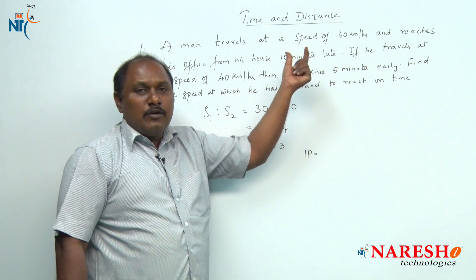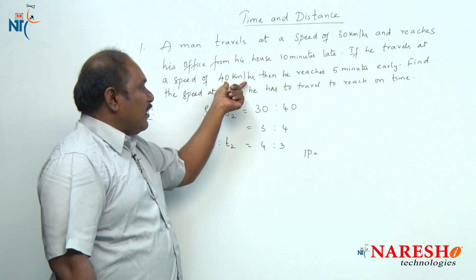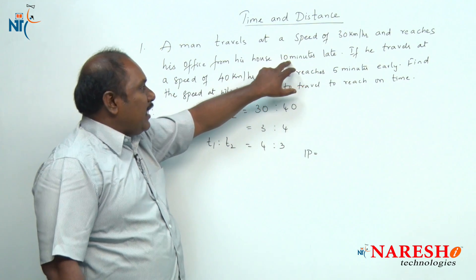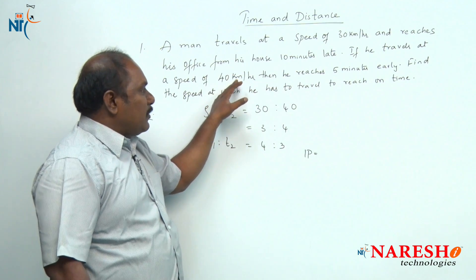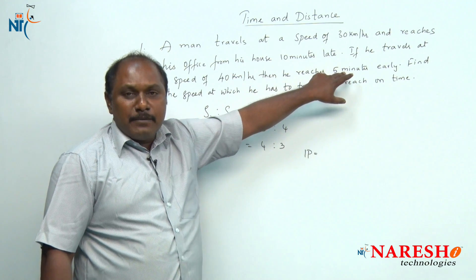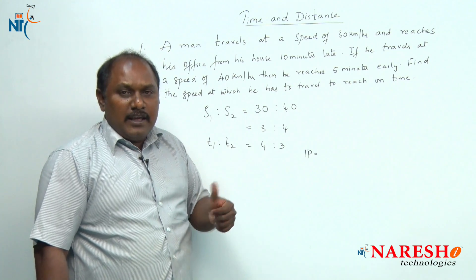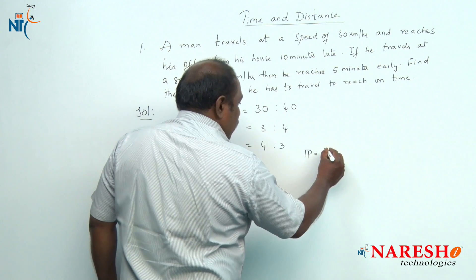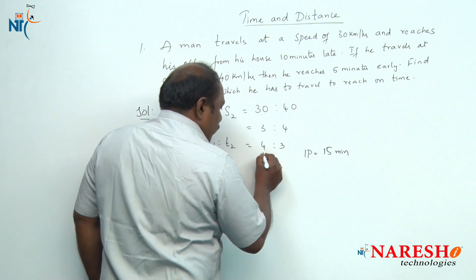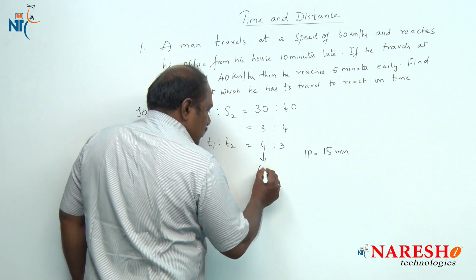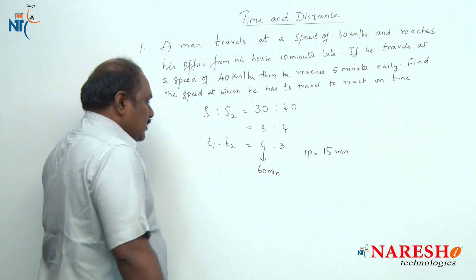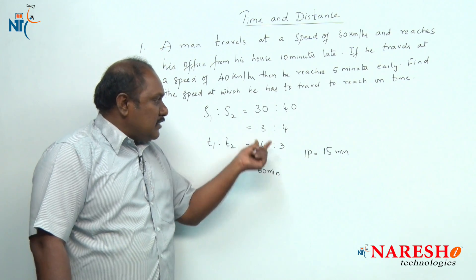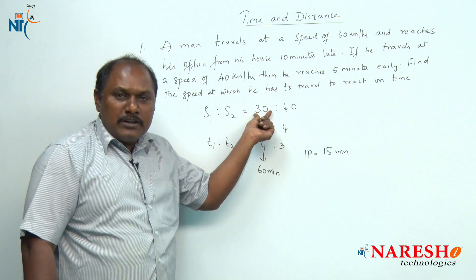Travelling at 30 kilometers per hour he is late by 10 minutes, and travelling at 40 kilometers per hour he is early by 5 minutes — 10 minutes late, 5 minutes early. So the difference is 15 minutes. One part equals 15 minutes, so 4 parts will equal 60 minutes. This 60 minutes is the time taken by him to reach his office travelling at a speed of 30 kilometers per hour.